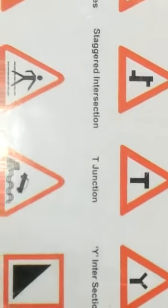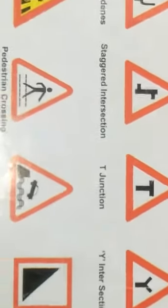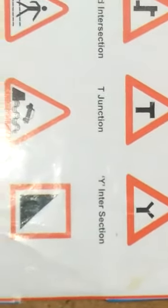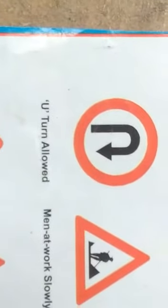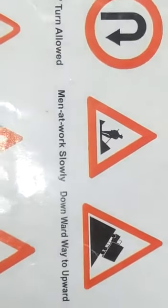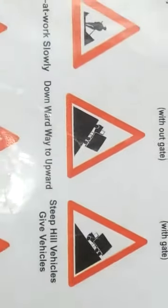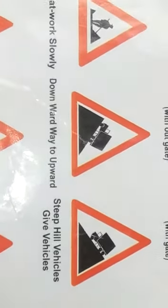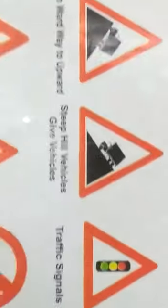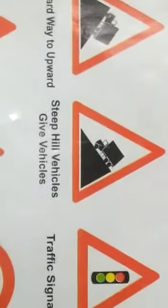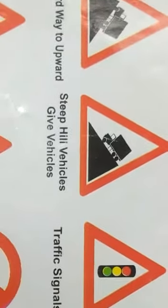This is staggered intersection. This is T junction. This is Y intersection. And this is U-turn allowed. This is men at work, drive slowly. This symbol is downward slope. And this symbol is steep hill, use lower gear.